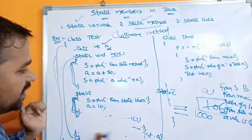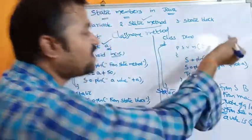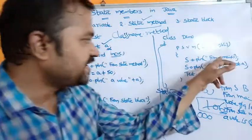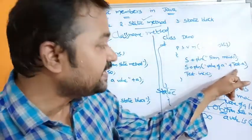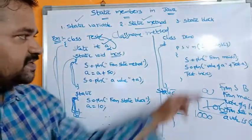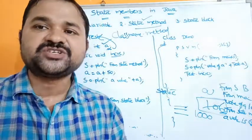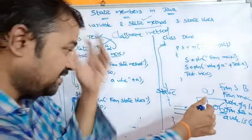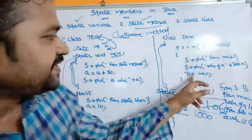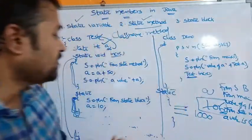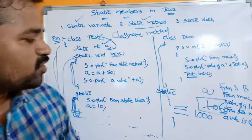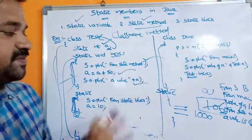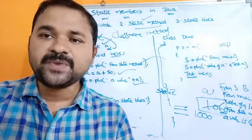Now let's assume the main method is not in the Test class but in a separate class called Demo: class Demo, public static void main(String[] args). First the static block executes. Then to access the static variable, since it is in the Test class and the main method is in Demo class, we must use the class name: test.a. Similarly for the static method we must write test.incr. Control goes to incr, 'from static method' is printed, and a becomes 60. This concludes static variable, static method, and static block.